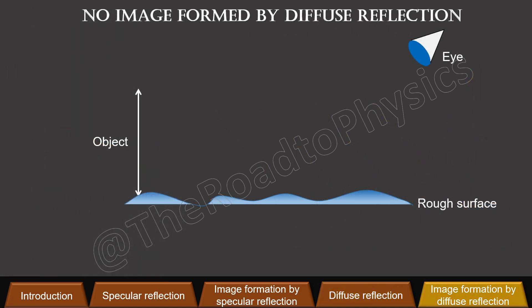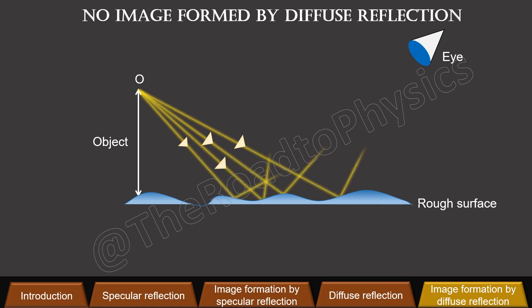You can also use the laws of reflection in the case of diffuse reflection to see if any image is formed. You will see that the light rays from point O on the object, incident on a rough surface, diffuse in all directions. The reflected rays do not meet or appear to meet at any point. This is why no image is formed of the object. I hope this clarifies the concept of specular and diffuse reflection.